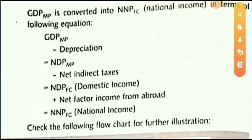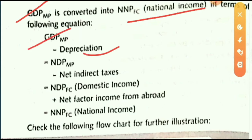The next step is to convert GDP at market price to national income. GDP at market price needs to be adjusted to arrive at national income.